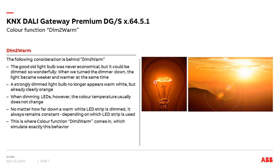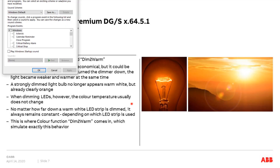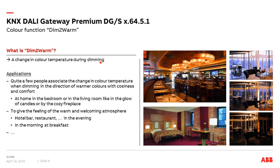Some customers, especially in the residential market, want exactly this feature of a historical light bulb or halogen lamp — when we dim down, the color temperature should change to warm light. With our DALI gateway, we can simulate this using DALI devices. DIMM-TO-WARM means when we dim darker or brighter, the color temperature changes automatically. This is also a parameter in the ETS where we can enable, disable, or always-enable it. A typical application is in residential settings like family homes with candles or cozy fireplaces, or in public buildings like hotels and restaurants for a warm welcome feeling.